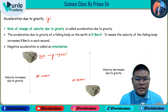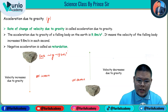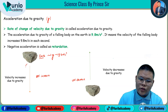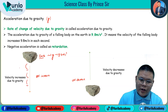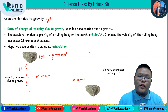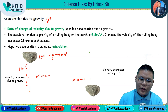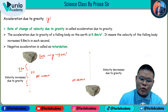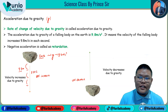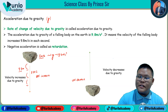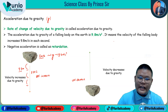The acceleration due to gravity is 9.8 meters per second squared. This means the velocity of the falling body increases by 9.8 meters per second every second.